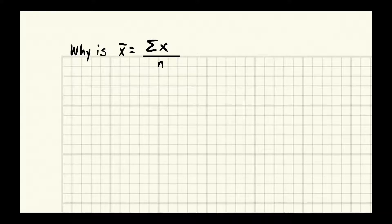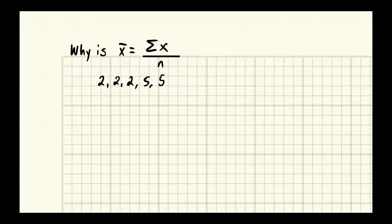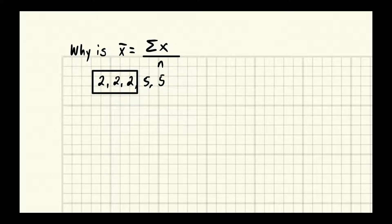We're measuring central tendencies, and if I have a set of numbers like 2, 2, 2, 5, 5, and I wanted to know a measure of the center — a measure of what we'd call an average. Well, we could find the center a couple of ways. One way: the center will probably be closer to values that occur more often, so we could find the mode. 2 occurs the most, so that would be our mode.